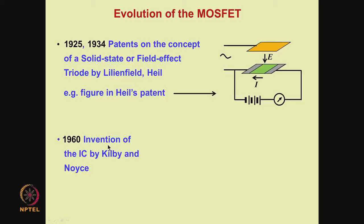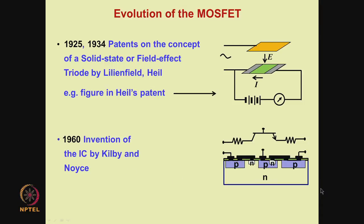In 1960, Kilby and Noyce invented what is called the integrated circuit, where the idea was to put together the bipolar transistor — being used for building amplifiers — and resistors and other parts of the circuit, all on a single substrate. Here is the example of a structure in which you have a bipolar transistor in series with two resistors realized on a substrate. This P region gives you one resistance, another P region gives the other resistance, and this is an NPN bipolar transistor.